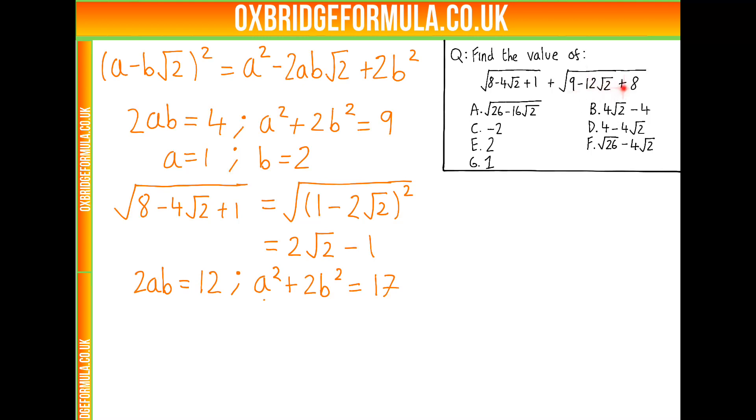Now let's do the same for the other root. So we need 2ab to be 12, and a squared plus 2b squared to equal 17.